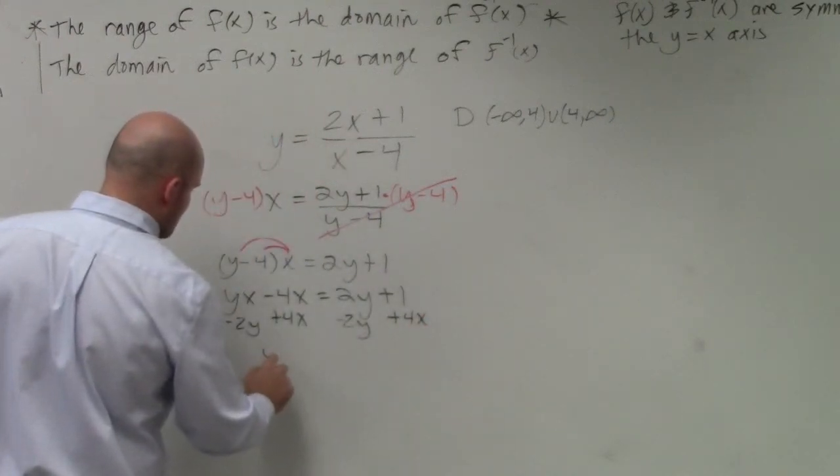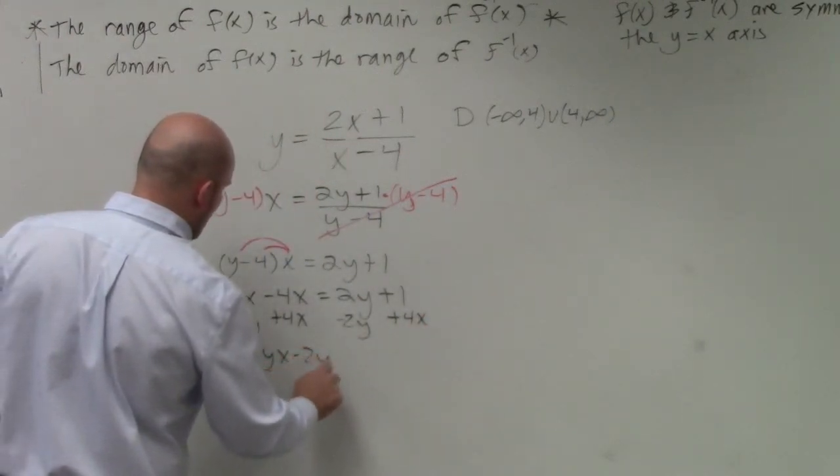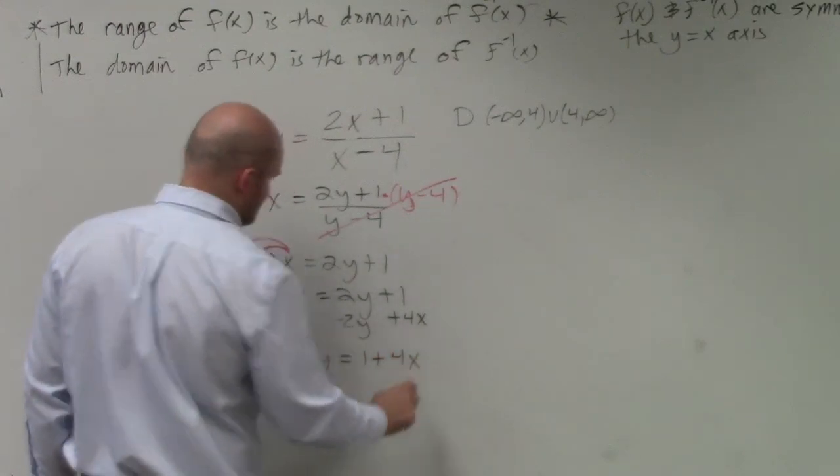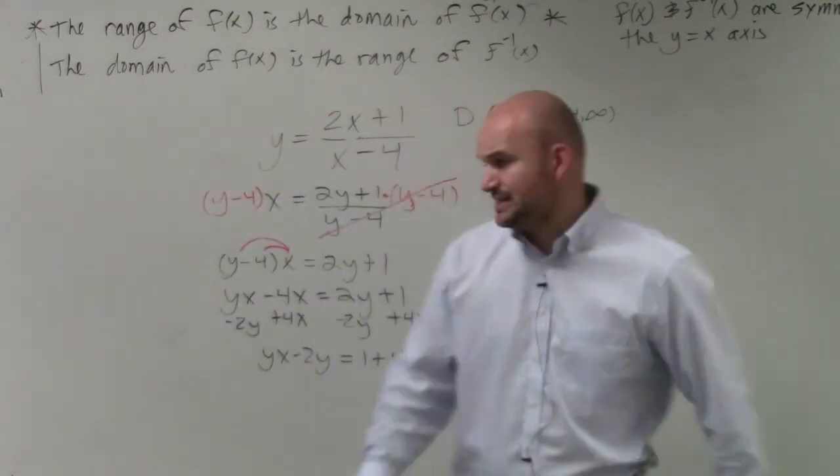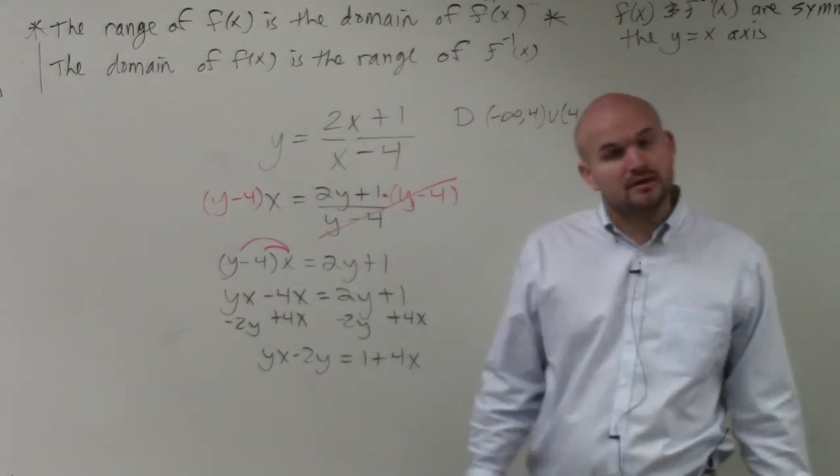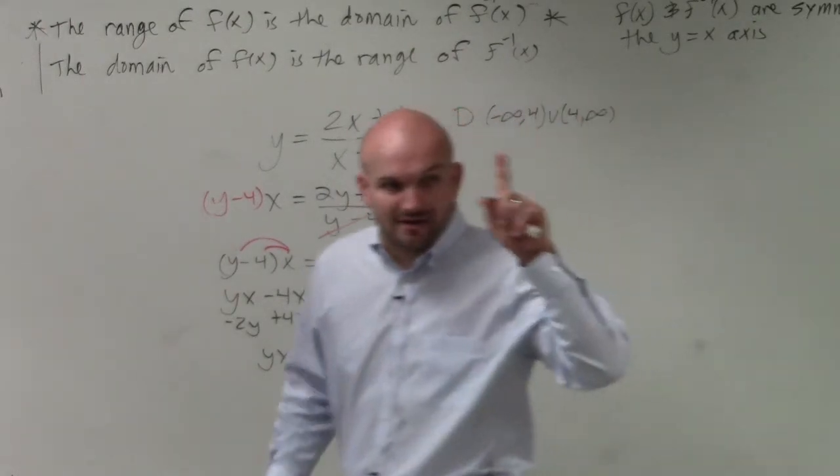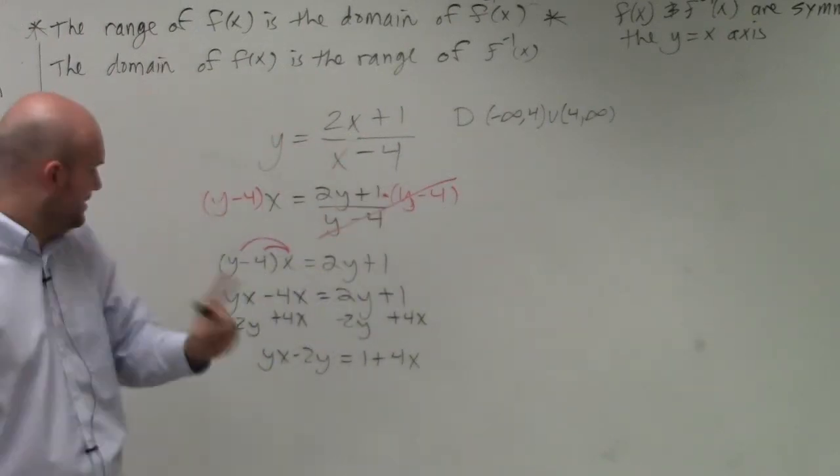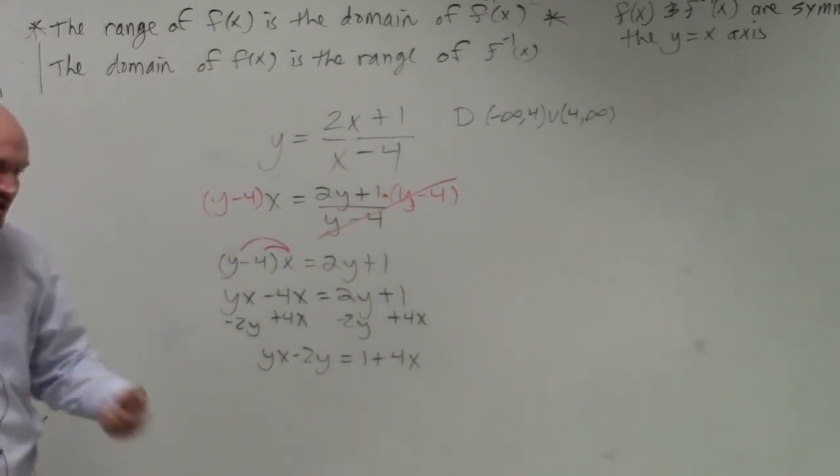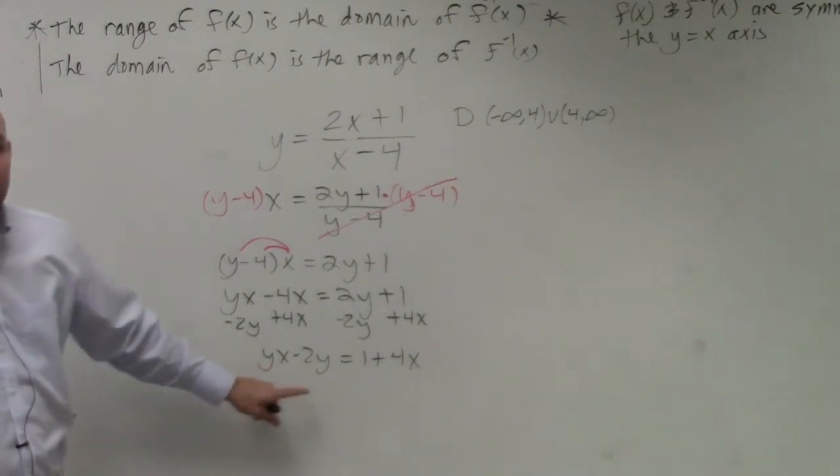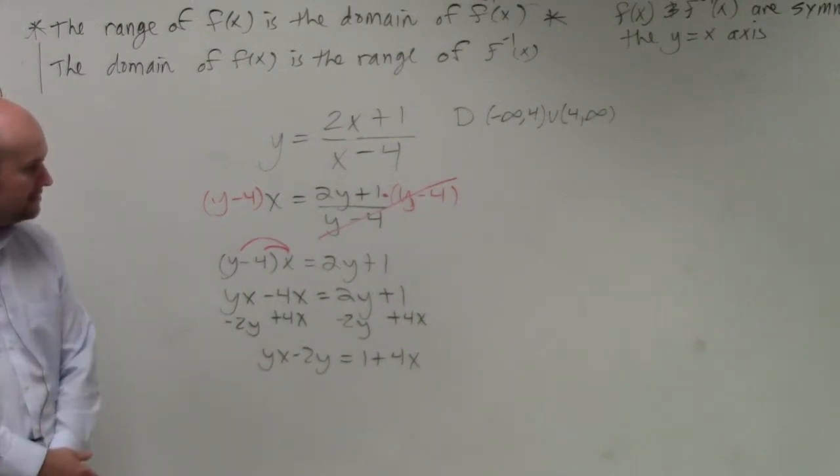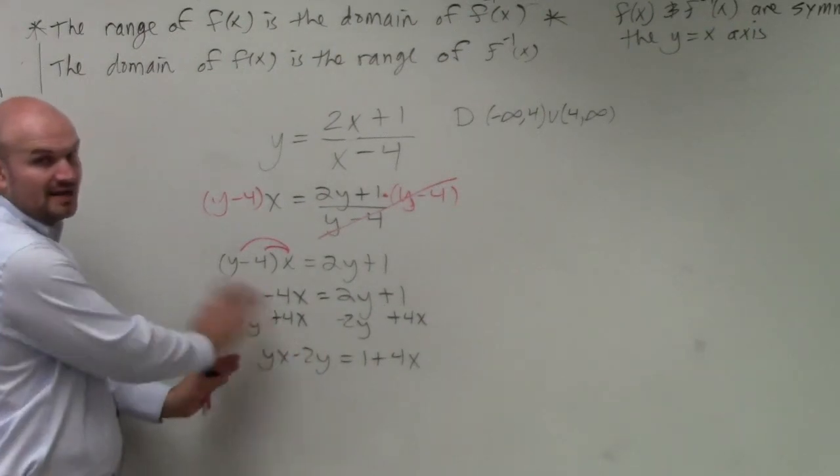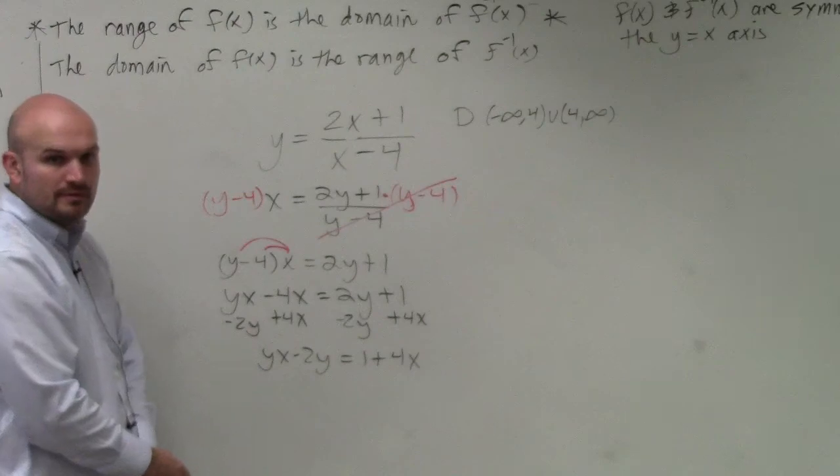Now I am left with yx minus 2y equals 1 plus 4x. And you might still be saying to me, it still looks really confusing. Well, yes, because to solve for y, we have to only have one variable, right? Can't just have yy. Can't say yx minus 2y equals. No, we need y. Because I want to get the y's on the left side, everything else on the right side. Does that make sense?